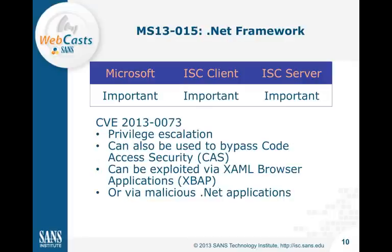MS-1315 fixes a vulnerability in the .NET framework, rated only important because it's really a privilege escalation allowing bypass of code access security (CAS). CAS is used to limit what .NET code can do. There are two possible exploit vectors: the more likely one is via the browser — Internet Explorer can execute .NET XBAP (XAML browser applications) and CAS limits what they can do to the system. It can also be exploited via malicious .NET applications uploaded to a shared web server where CAS is relied upon to separate multiple entities.